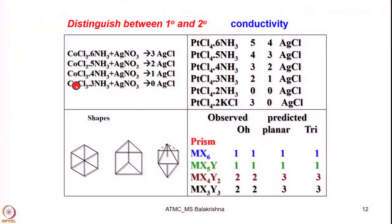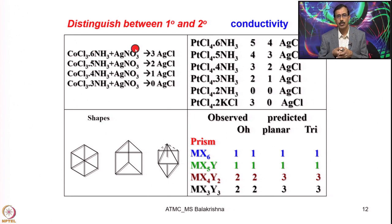Now let us look at how he distinguished between primary and secondary valency. He treated cobalt(III) chloride with excess ammonia and got hexaminecobalt(III) chloride. Treating this compound with excess silver nitrate, he obtained 3 equivalents of silver chloride precipitating out. Thereby he established that the 6 ammonia are secondary valency and the 3 chlorides are primary valency.